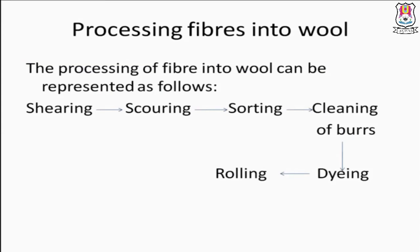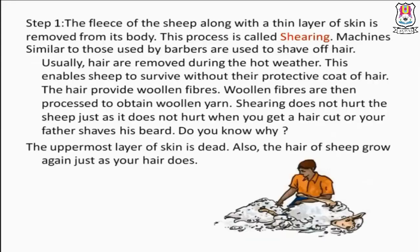Processing fibers into wool can be represented as follows: Step 1 is shearing, Step 2 is scouring, Step 3 is sorting, Step 4 is cleaning of burrs, Step 5 is dyeing, and Step 6 is rolling — total six steps. Step 1 — Shearing: the fleece of the sheep along with a thin layer of skin is removed from its body. This process is called shearing.